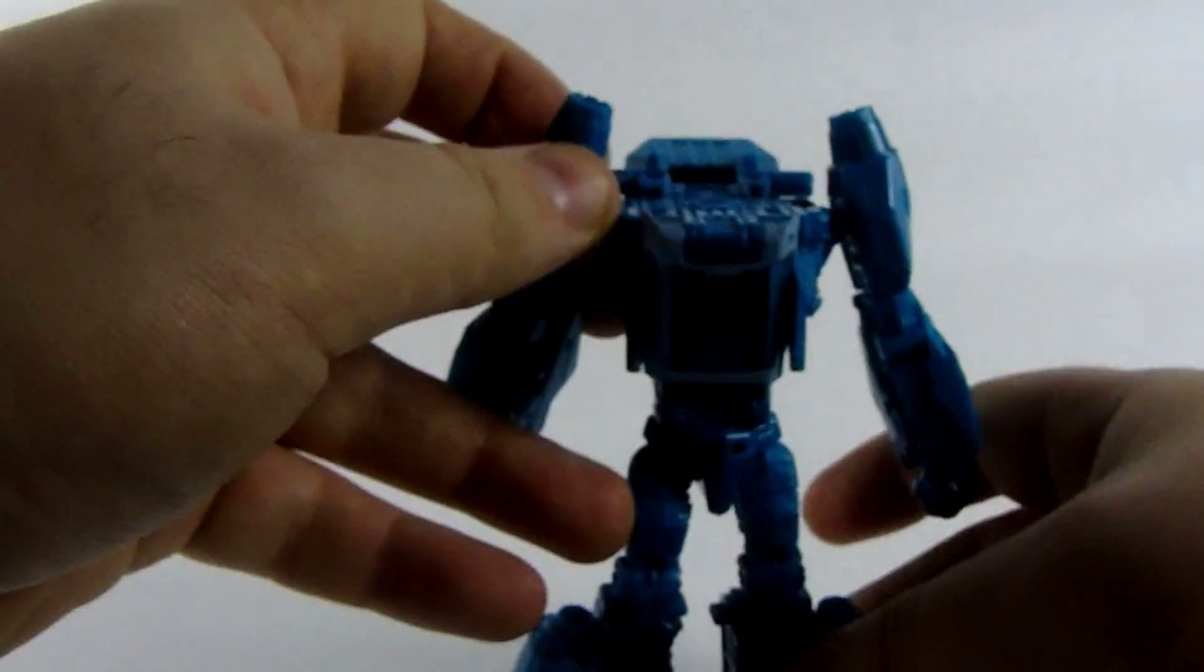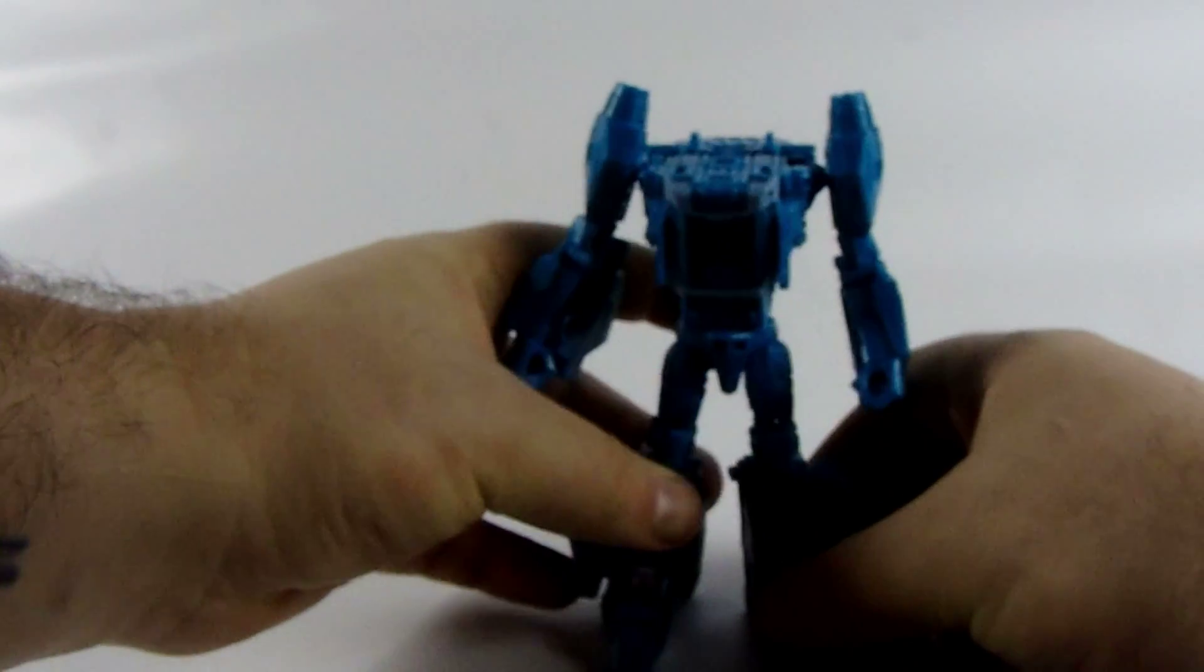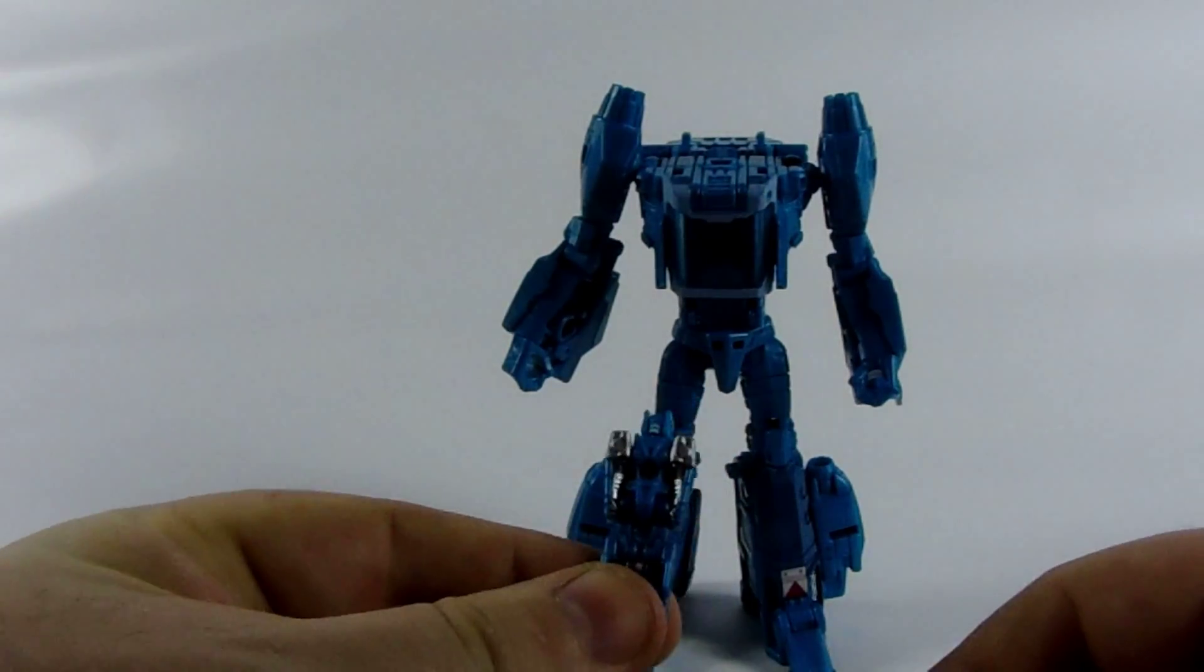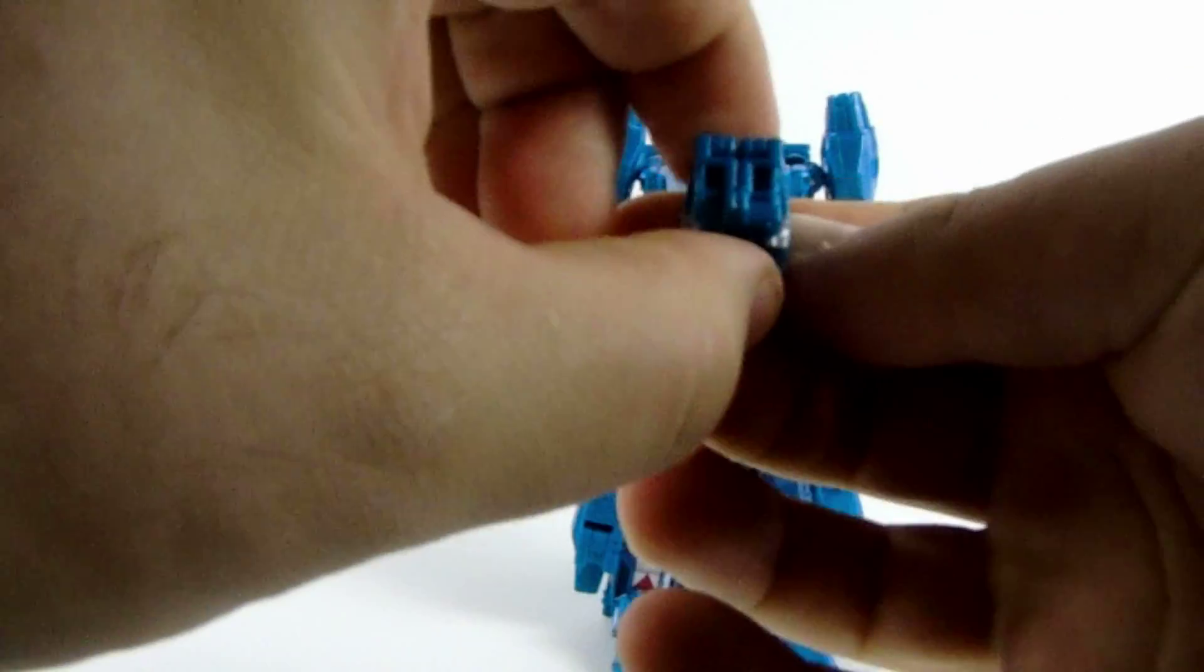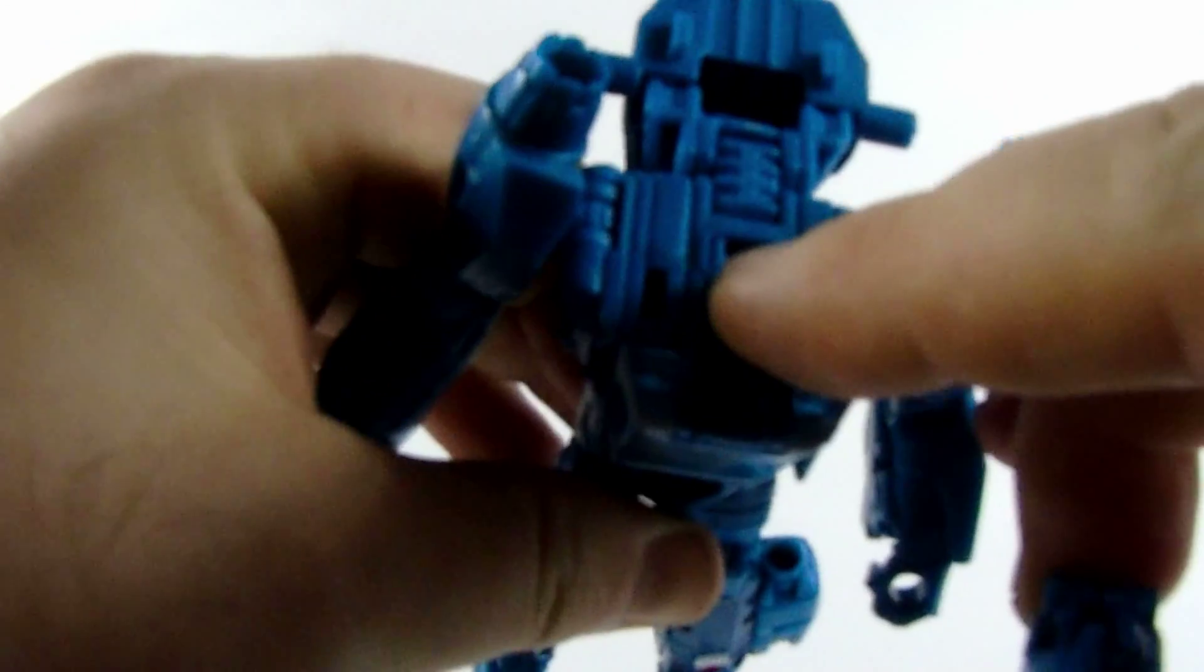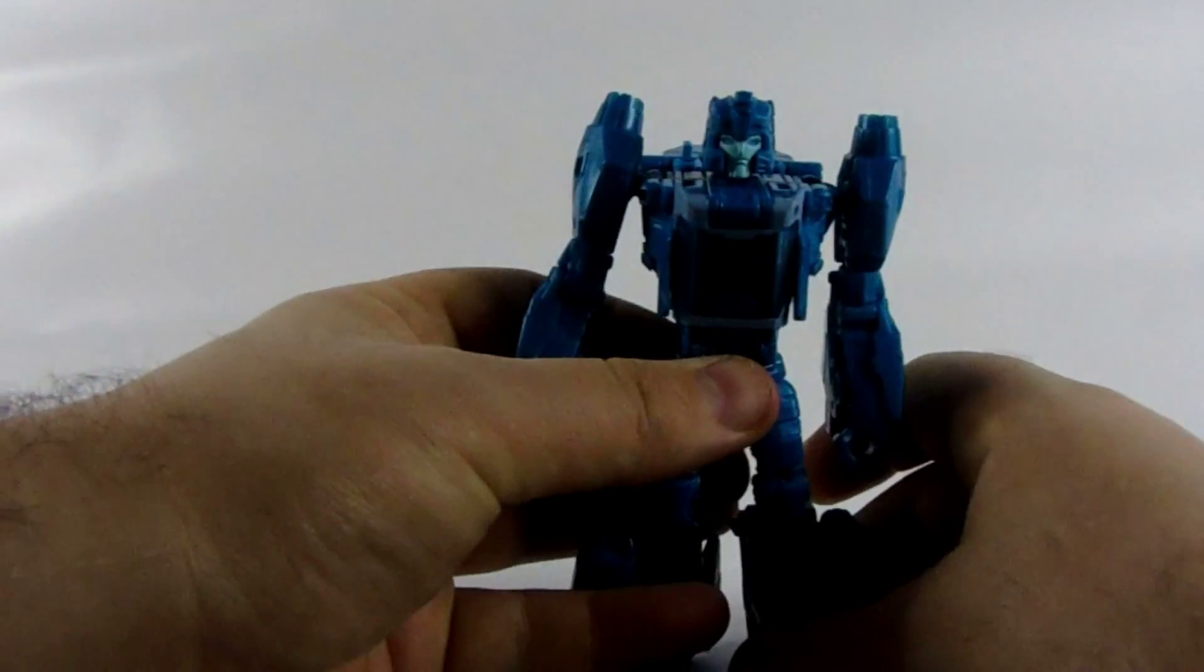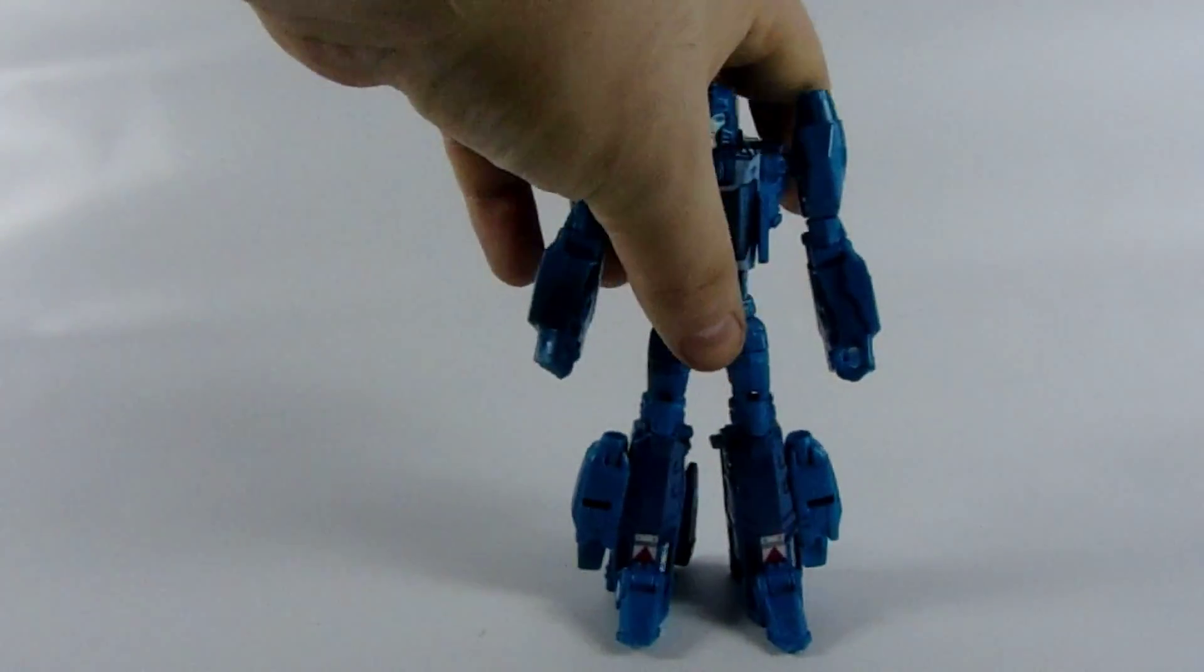There you want to fold this seat in, fold that back down like that, pull his arms down. And there you go, we have one Blur, well a headless Blur. You want to take Hyperfire and just bend his legs round like that. And then there's Blur's face that just presses in on the top there. It just pushes in quite tight this one, so just give it a little push. And there we have Blur complete in his robot mode.